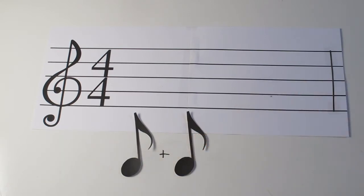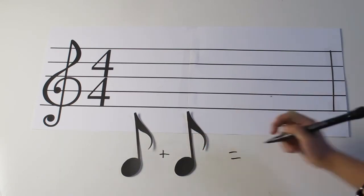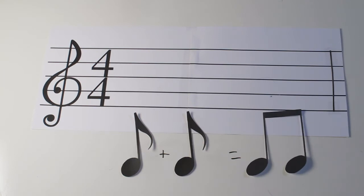When two eighth notes are next to each other, they look like this. One eighth note has the count one and the second eighth note has the count and. So together they make the beat of one and.